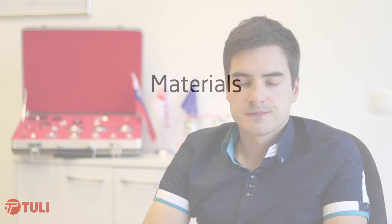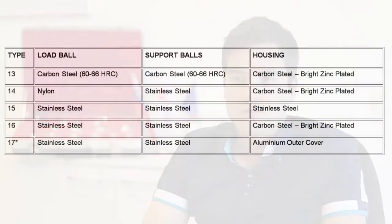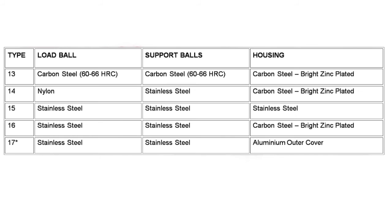After you do this, the only thing left is to select the material of the ball units. Ball transfer units are available in a variety of materials depending upon the application and/or environment. For general use you should use standard type 13 units with carbon steel balls and zinc plated housing. If delicate materials are to be maneuvered, then a nylon type 14 or phenolic load ball should be considered. In this case the load capacity of a unit is much lower compared to the standard type 13. For harsh environments you can use partial or full stainless steel units, type 15 and 16.